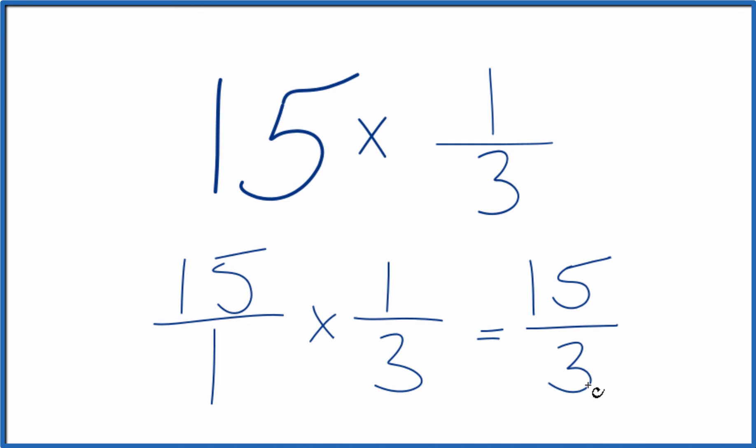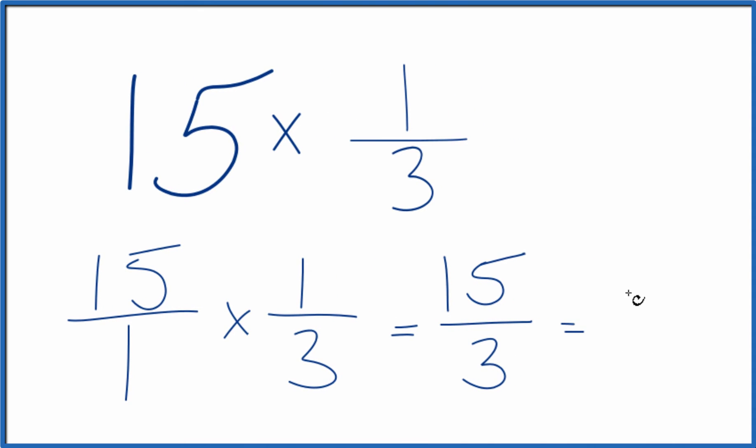We can simplify this though. 3 goes into 15 a total of 5 times. So in answer to our question, 15 times one-third equals 15 thirds, or just 5. This is Dr. B, and thanks for watching.